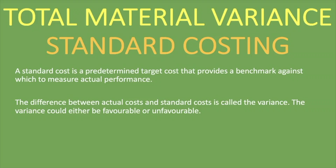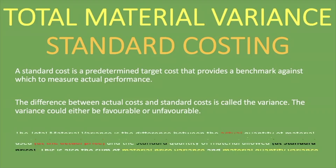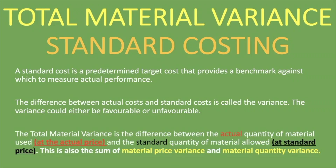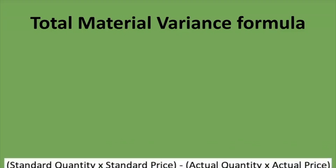With the total material variance, it is the difference between the actual quantity of material used at the actual price and the standard quantity of material allowed at the standard price. It is also the sum of the material price variance and material quantity variance — when you get the answer for your material price variance and the answer for material quantity variance, the sum of the two will give you your total material variance.